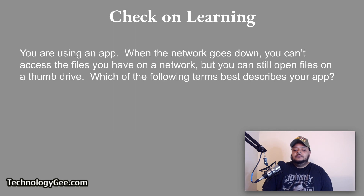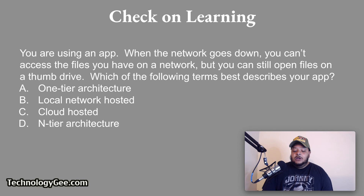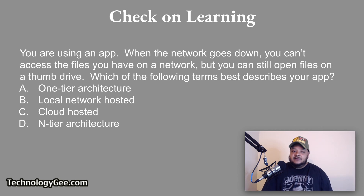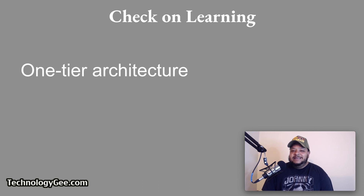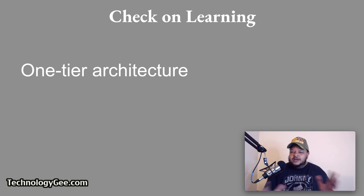Question two: you are using an app when the network goes down. You cannot access the files you have on a network, but you can still open files on a thumb drive. Which of the following best describes your app — one-tier architecture, local network hosted, cloud hosted, or n-tier architecture? The correct answer is one-tier architecture, meaning that all of your presentation, data, and logic are essentially stored on one machine or one device, which is why you can still access files on a thumb drive even when the network is down.